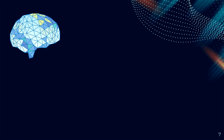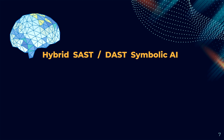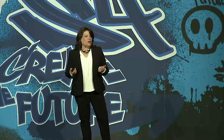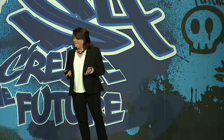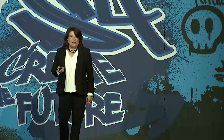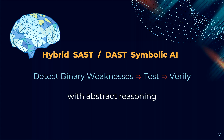The end result of our research and development was to combine hybrid static-to-dynamic symbolic AI. Symbolic AI is your old-fashioned AI, and I'll go into a little more detail on that. What it allows you to do is detect a weakness — in this case, a potential zero-day — and then verify it with abstract reasoning.